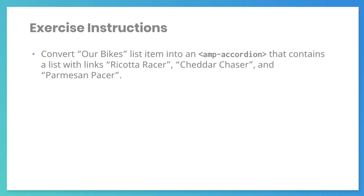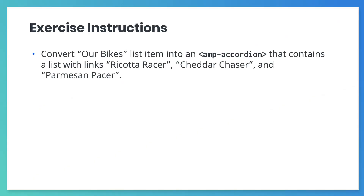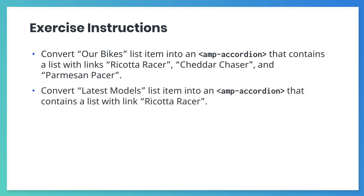Use the documentation for AMP Accordion to add our submenus. Convert the Our Bikes list item in the AMP Sidebar into an expandable list that contains links to all our bikes: the Ricotta Racer, the Cheddar Chaser, and yes, the Parmesan Pacer. Next, convert the Latest Models list item in the AMP Sidebar to another expandable list, this one containing a link to Ricotta Racer, the notorious and new cheese bike.